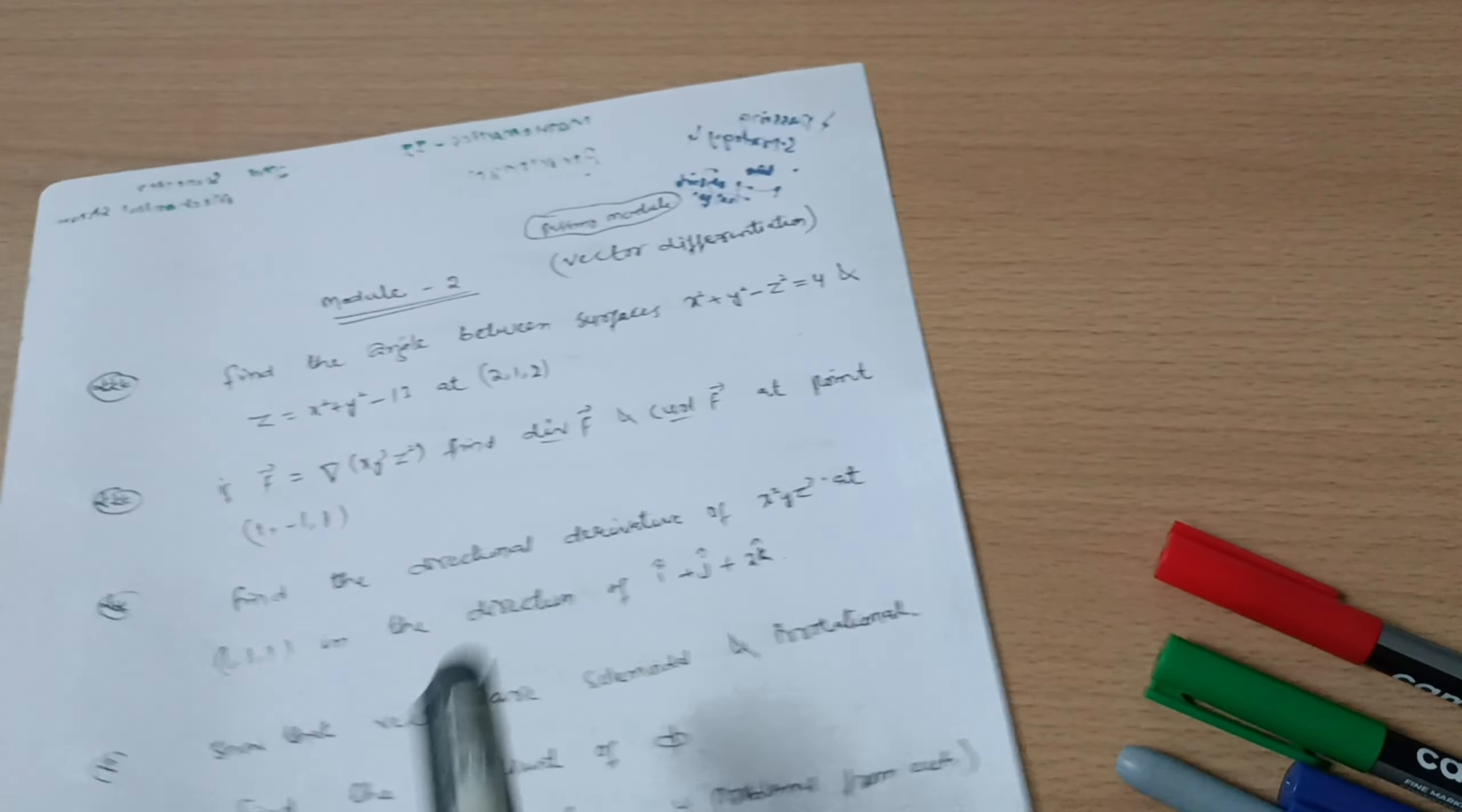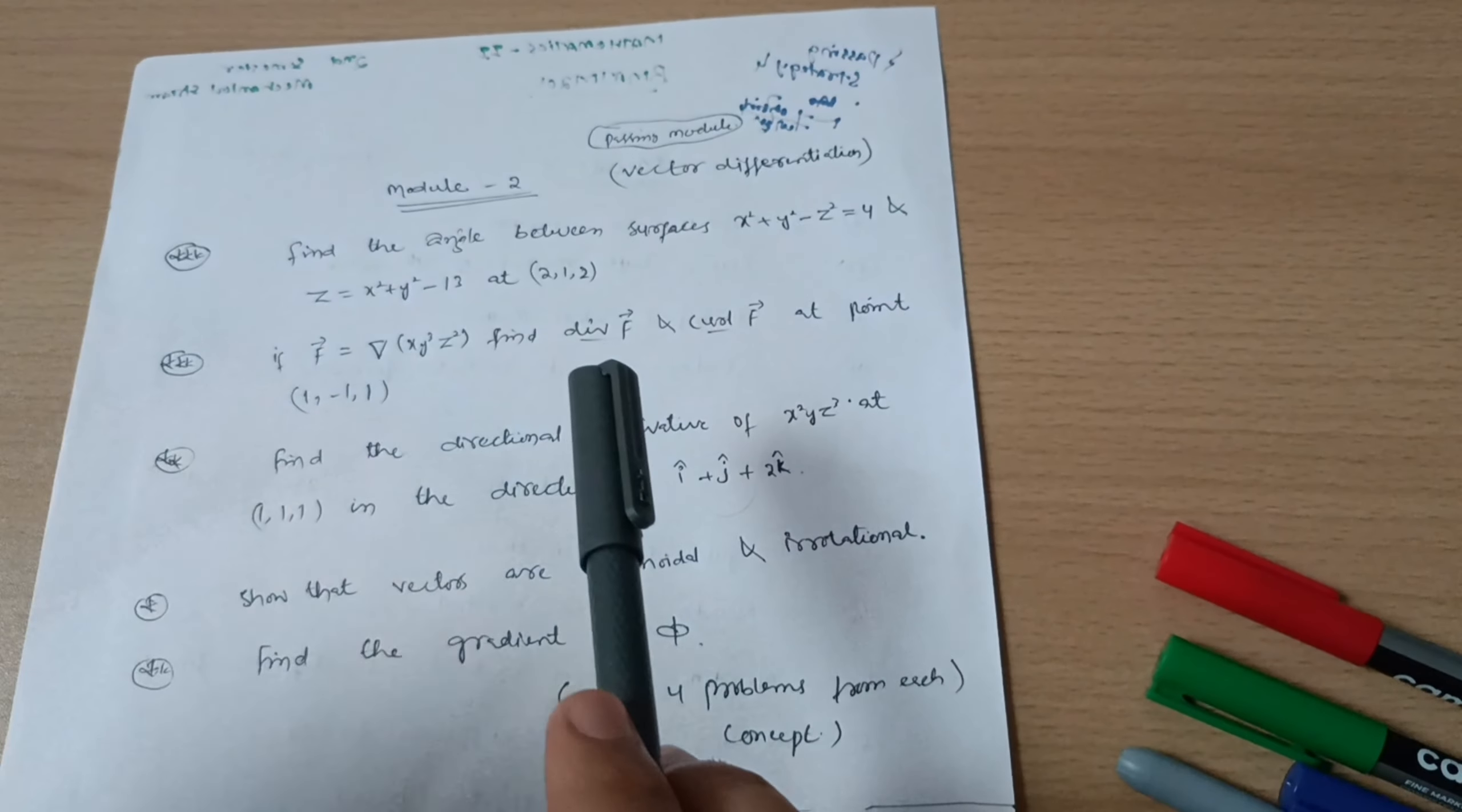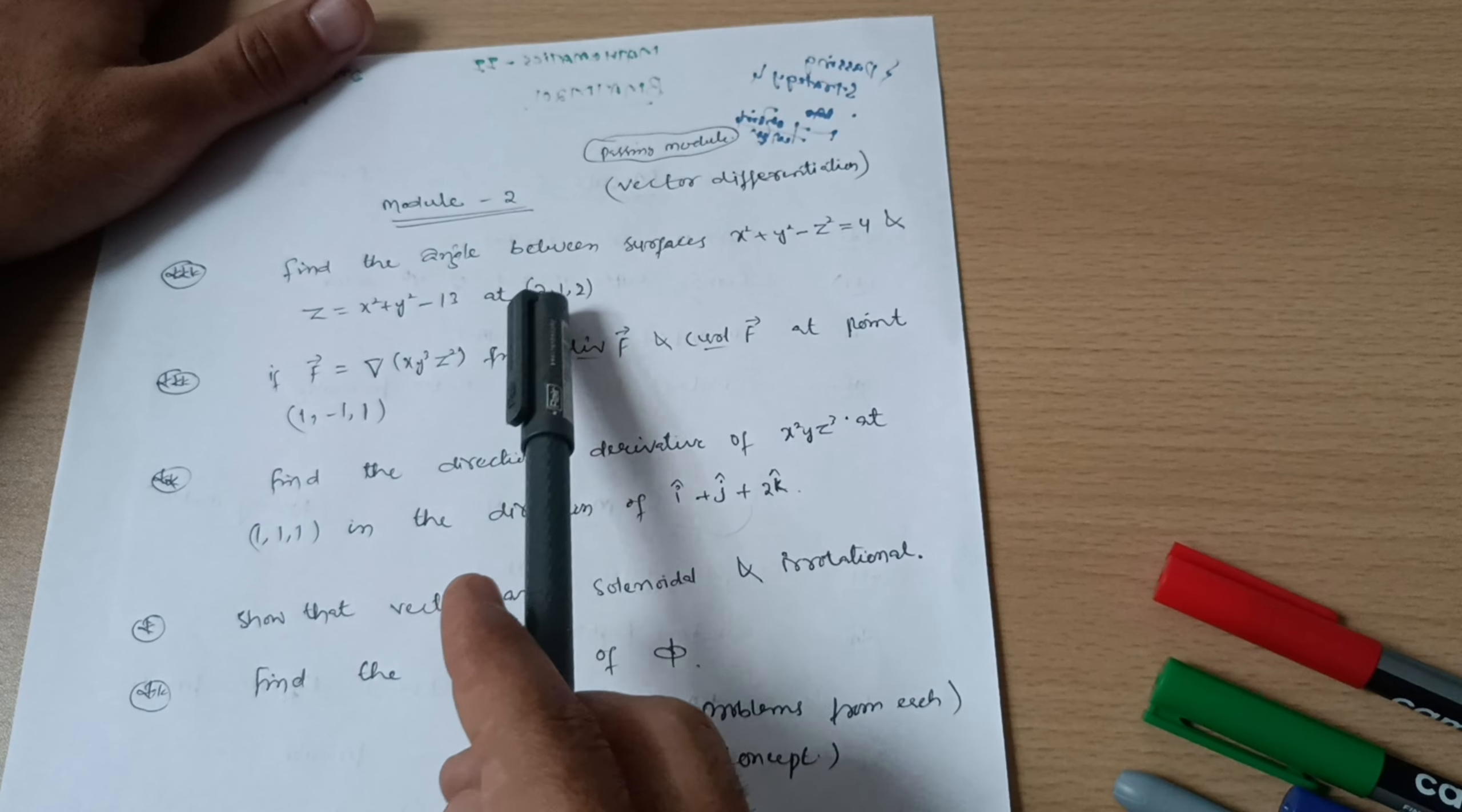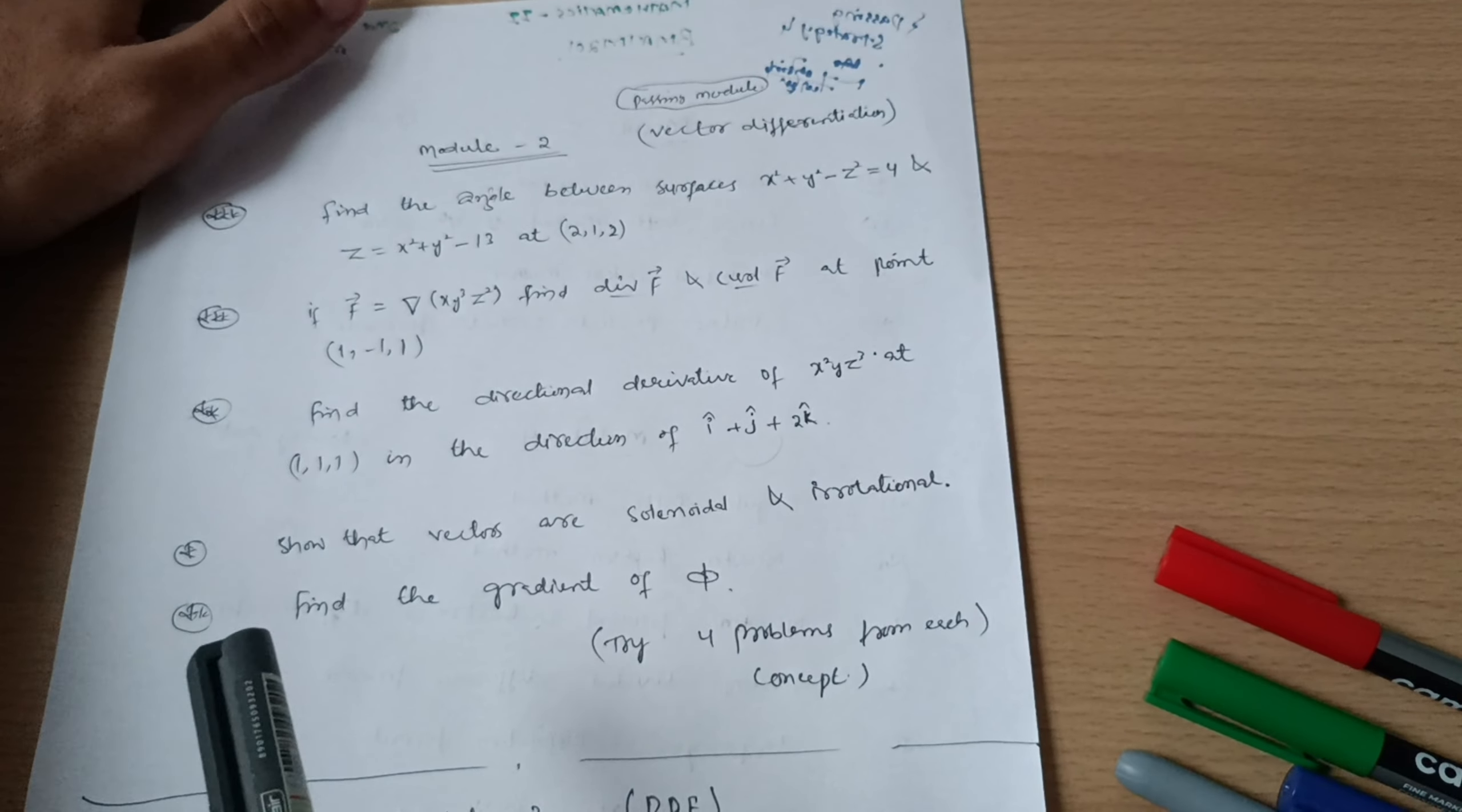I have taken Module 2, which is again a passing module with two chapters: vector differentiation and vector integration. You can leave the vector integration part which is typical. Vector differentiation is easier. Questions will be like: find the angle between surfaces, x square plus y square minus z square equals 4, and z equals x square plus y square minus 13, at point (2, 1, 2). Try at least four problems from this concept.